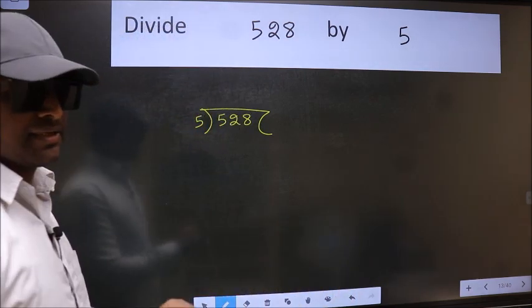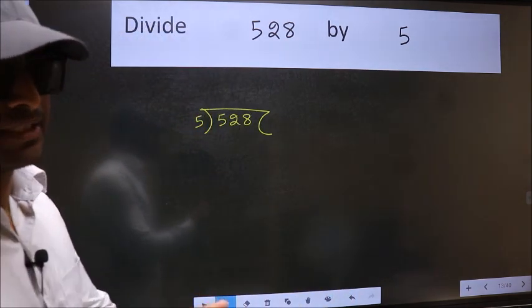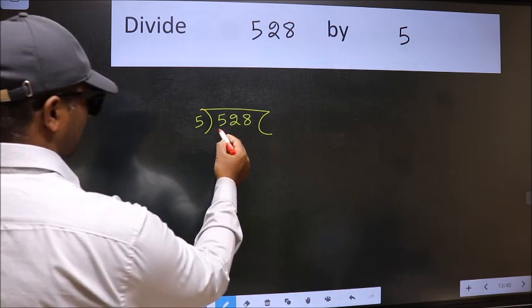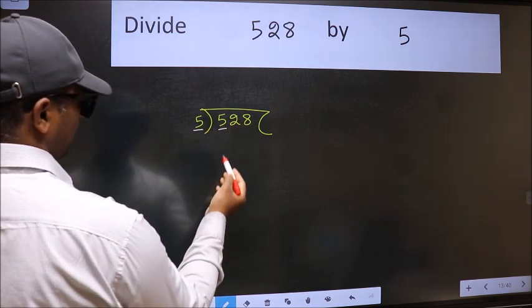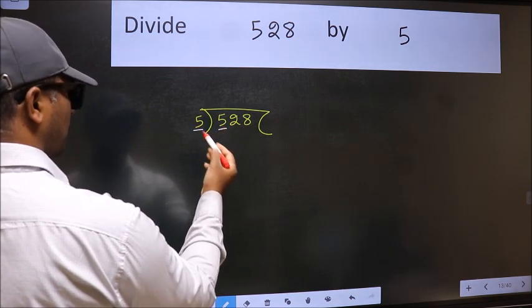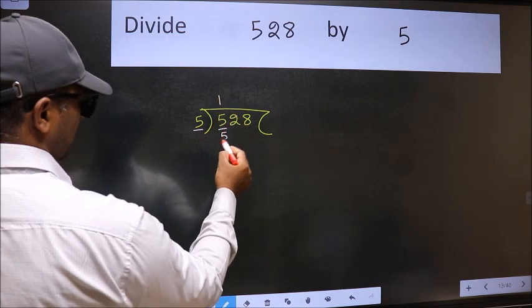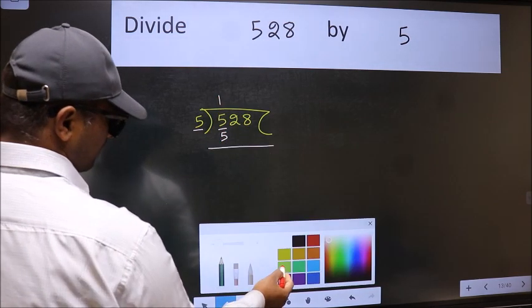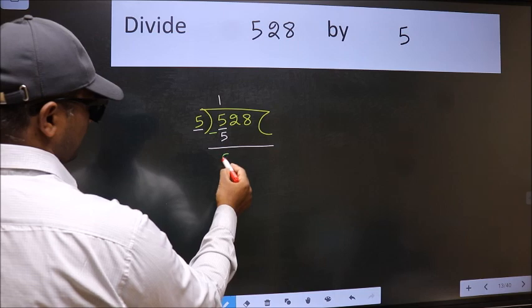This is your step 1. Next, here we have 5 and here also 5. When do we get 5 in the 5 table? 5 ones is 5. Now we should subtract. We get 0.